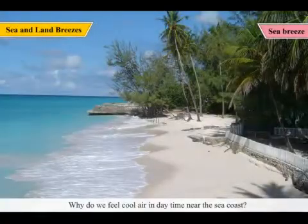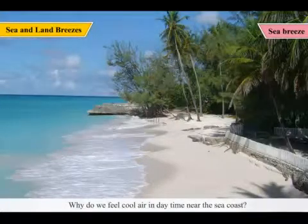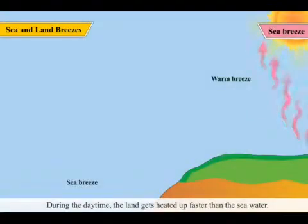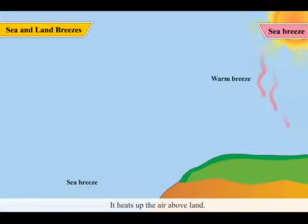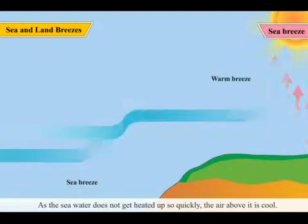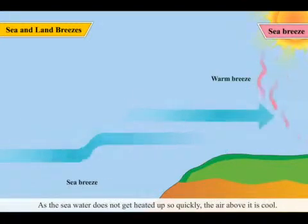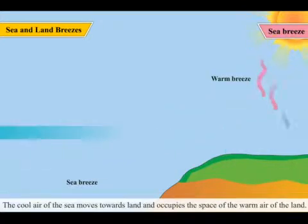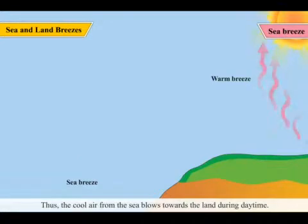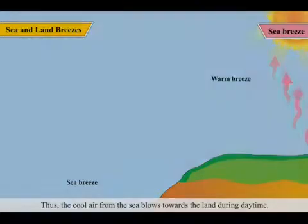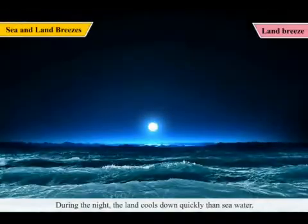Why do we feel cool air in daytime near the seacoast? During the daytime, the land gets heated up faster than the seawater. It heats up the air above land. The hot air is lighter and rises up. As the seawater does not get heated up so quickly, the air above it is cool. The cool air of the sea moves towards land and occupies the space of the warm air of the land. Thus, the cool air from the sea blows towards the land during daytime. This is called the sea breeze.